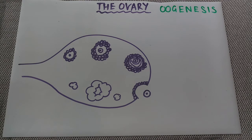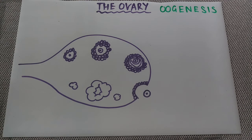The process of oogenesis involves mitosis, cell growth, two divisions of meiosis, and then differentiation at the end, which is the same as the processes that happen in spermatogenesis, the formation of sperm cells.